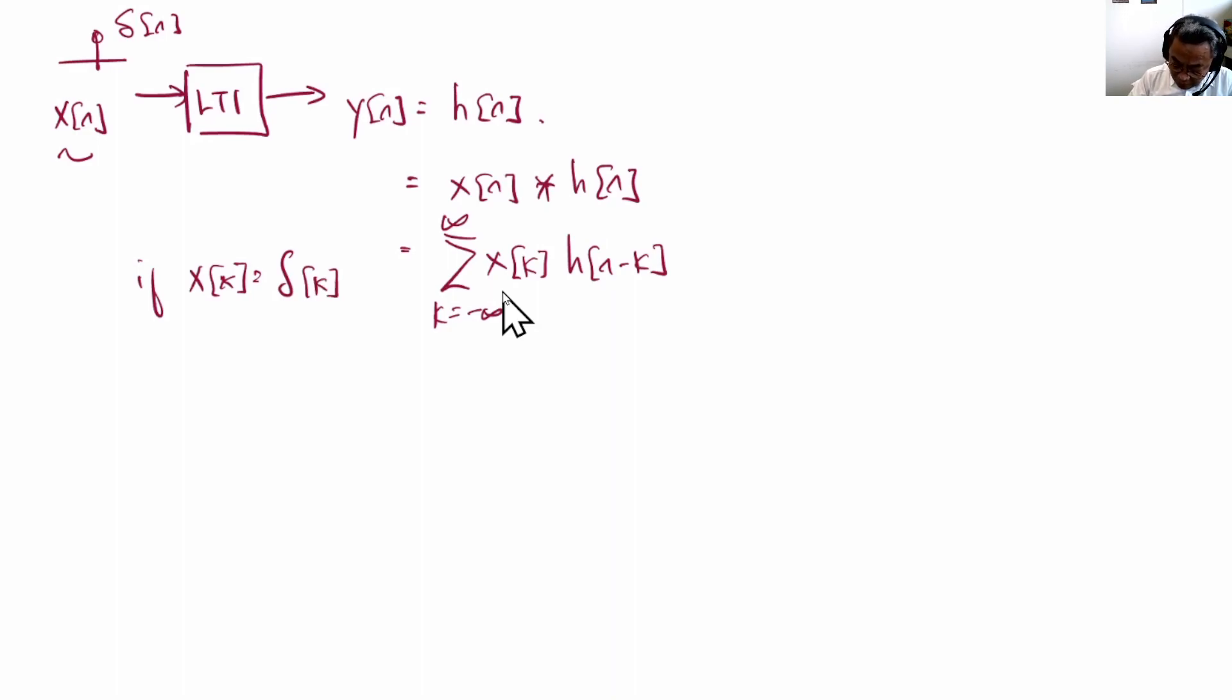This is the convolution equation in detail. Now if x[k] is simply delta[k], then all the values of x[k] become zero except at time zero. So what it reduces to is x[0], which is one, multiplied by h[n-0], which is one times h[n]. Now we see why the convolution equation, when you are given the impulse, will result back to h[n].